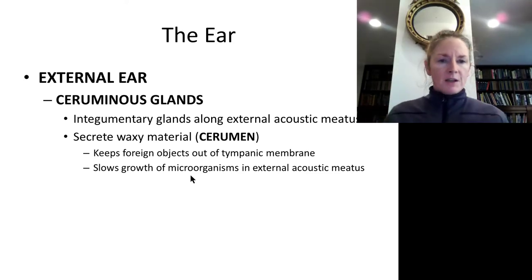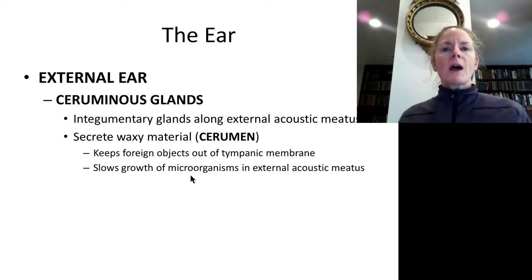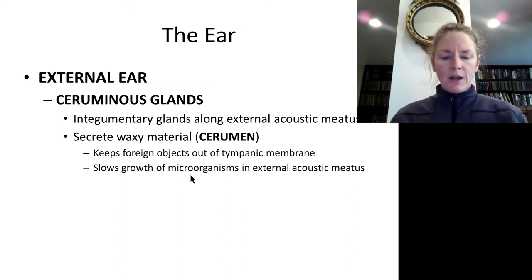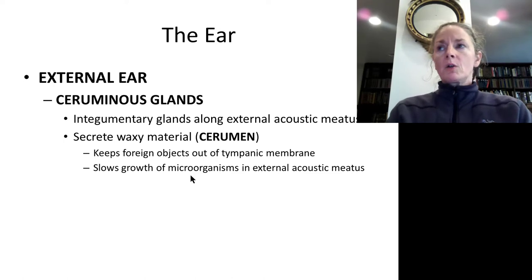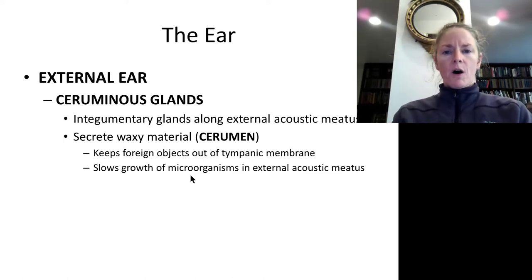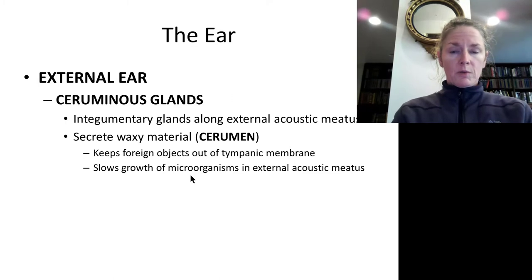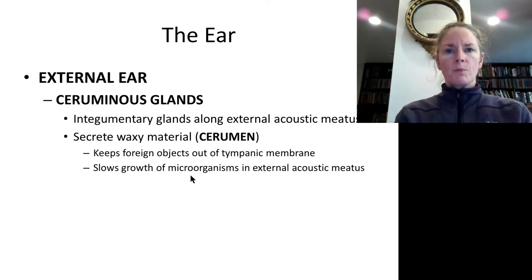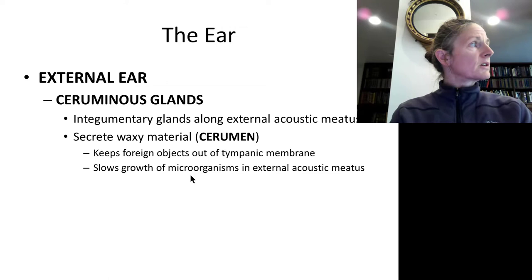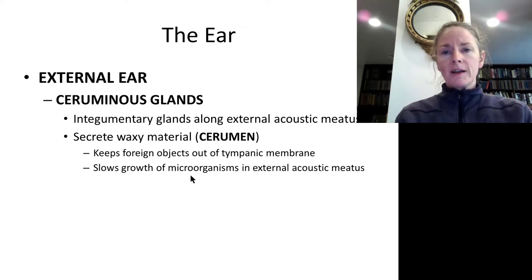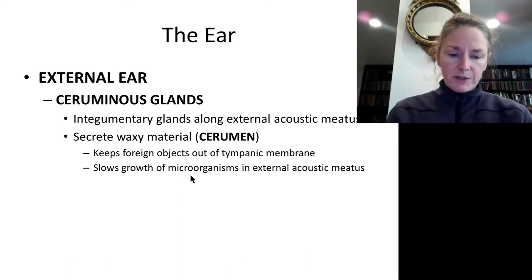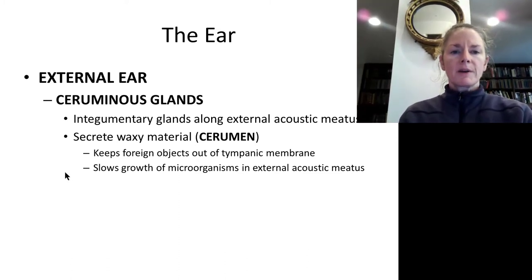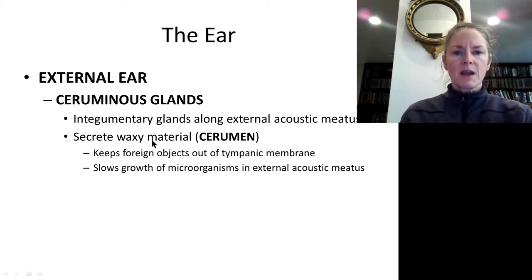Earwax can become a problem if it builds up too much, forming an earwax plug that acts just like an earplug and attenuates sound. Sometimes people come in complaining of hearing loss with no obvious cause, and someone looks in with an otoscope and finds a large buildup of earwax. Nowadays it's removed with carbamide peroxide to soften it, then flushed out with a warm water syringe.